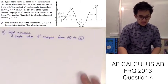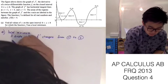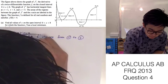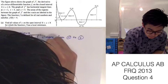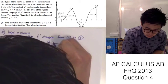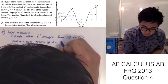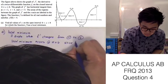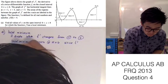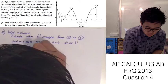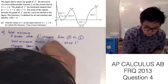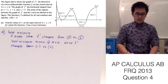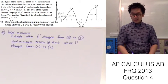So to write it down: x = 6 is our local minimum. And that's how we answer problem letter A.